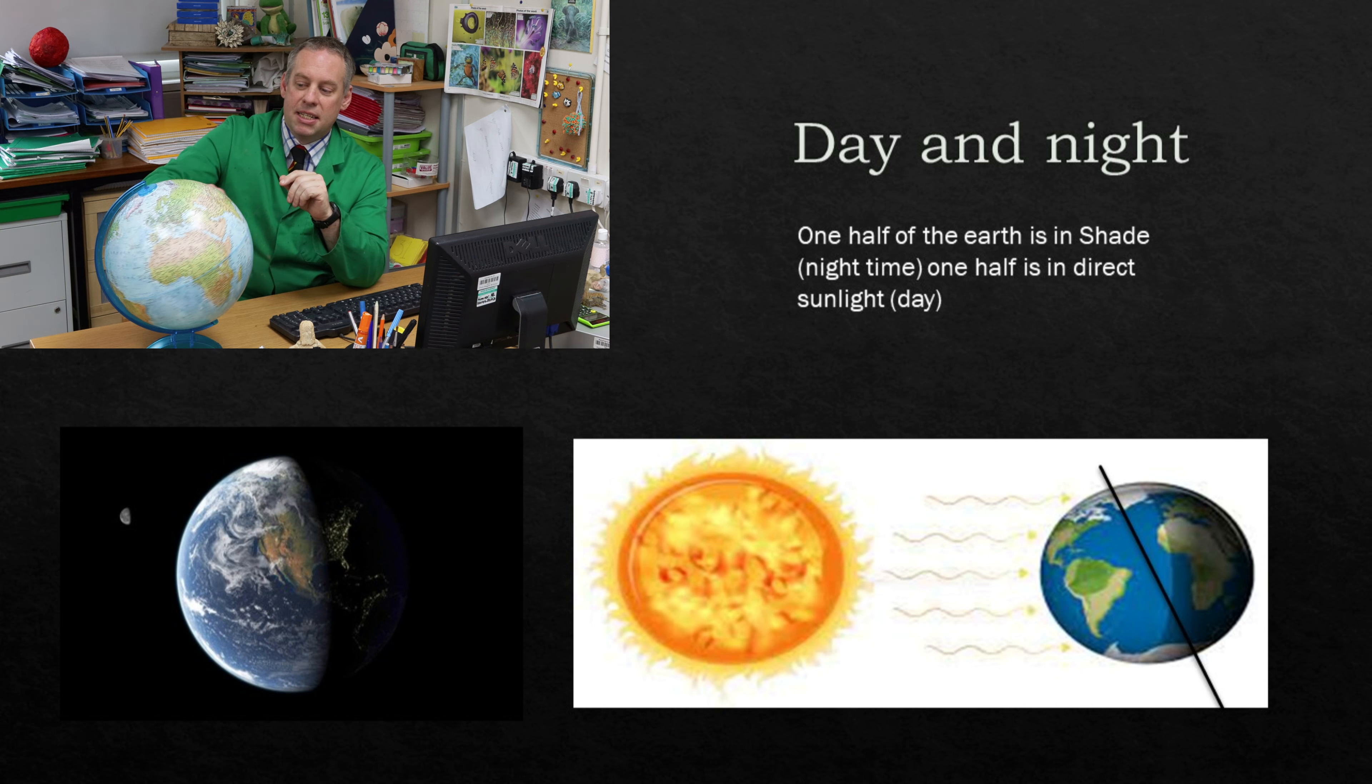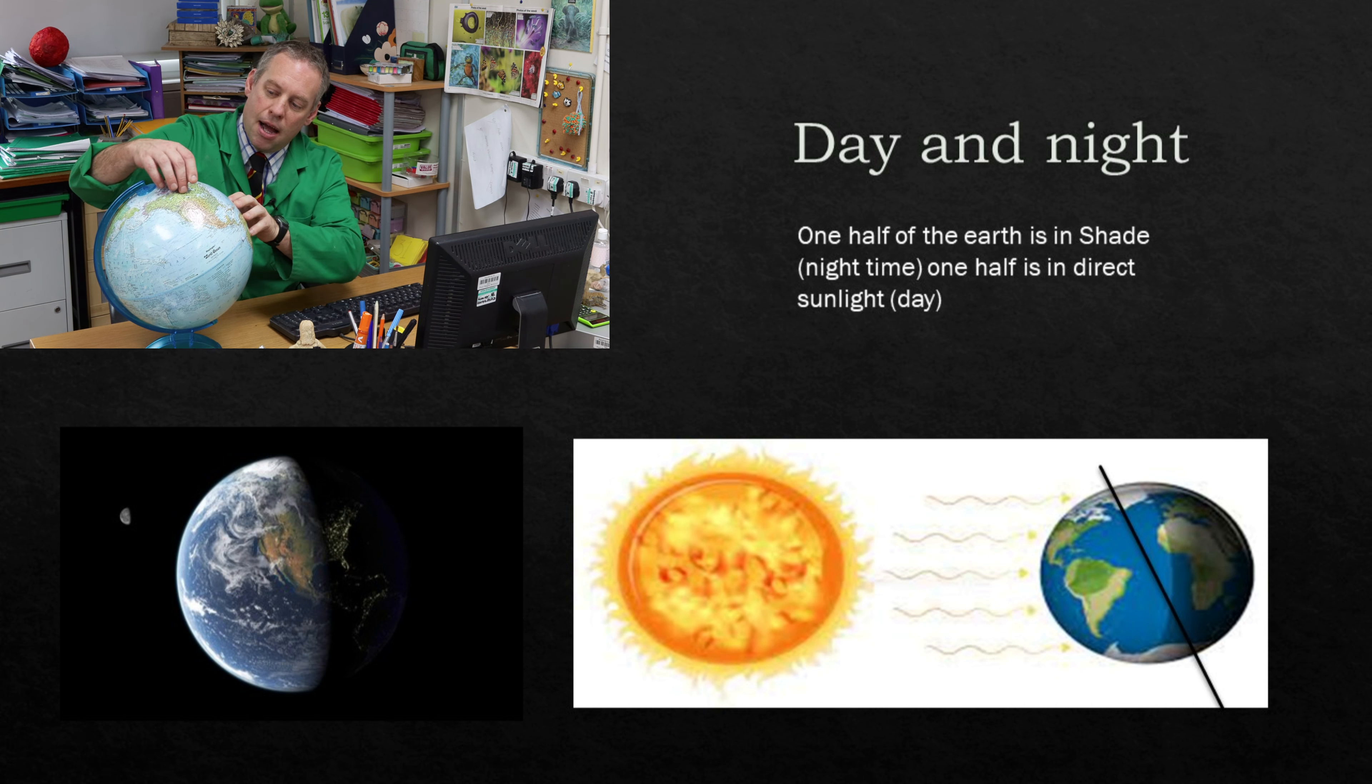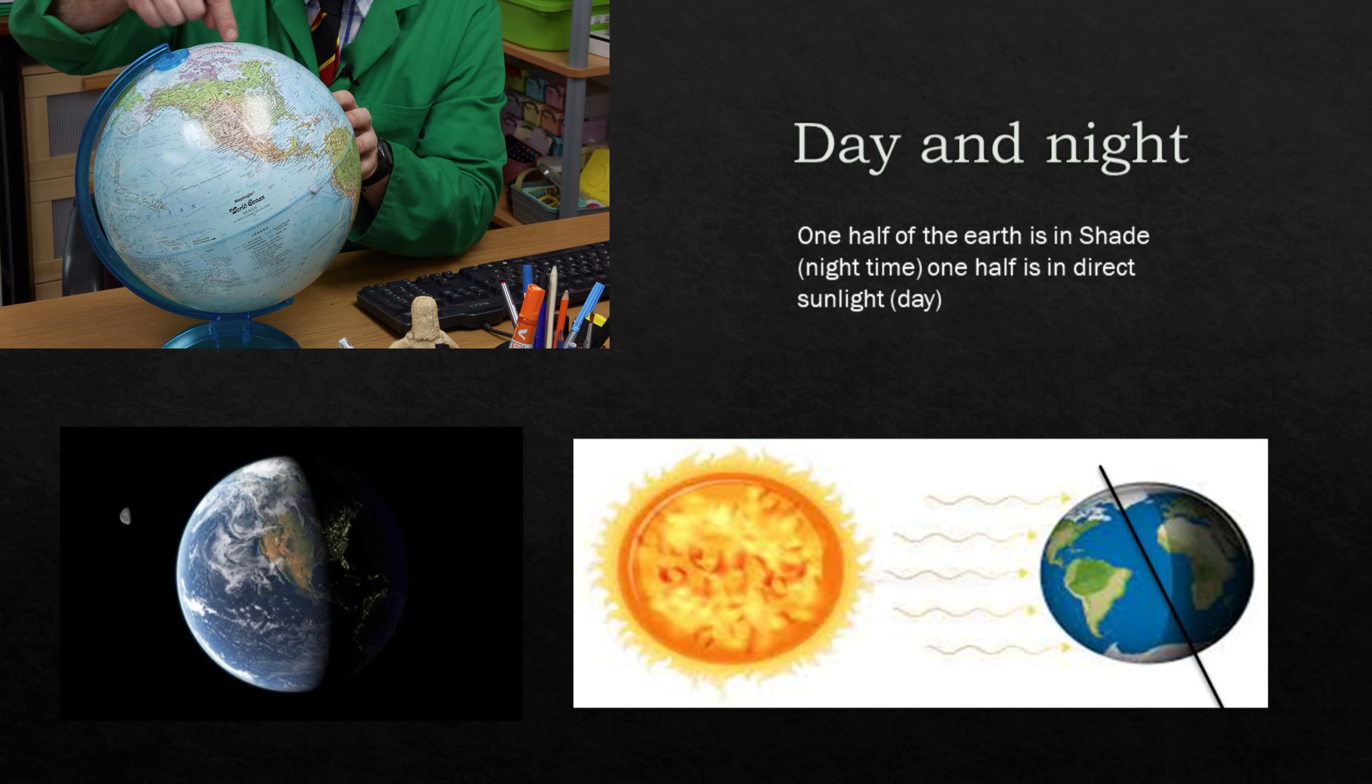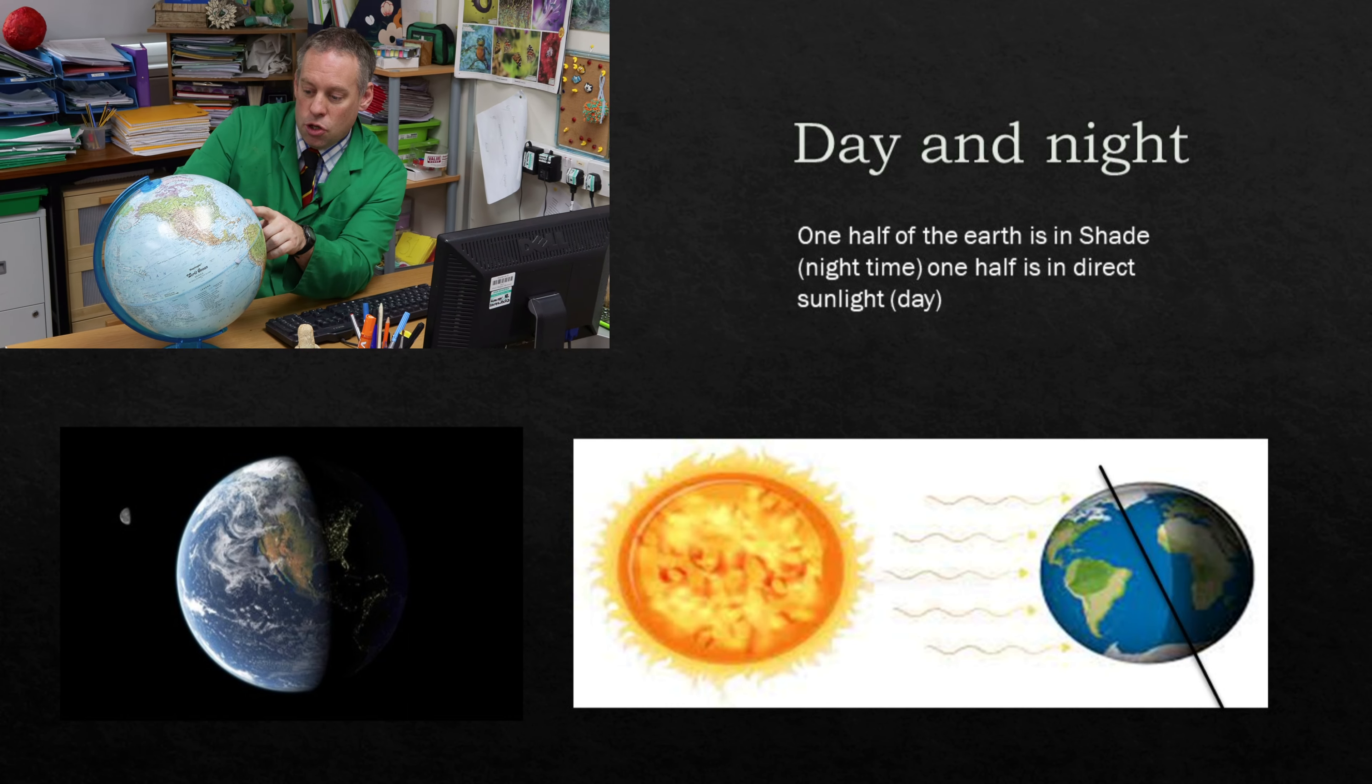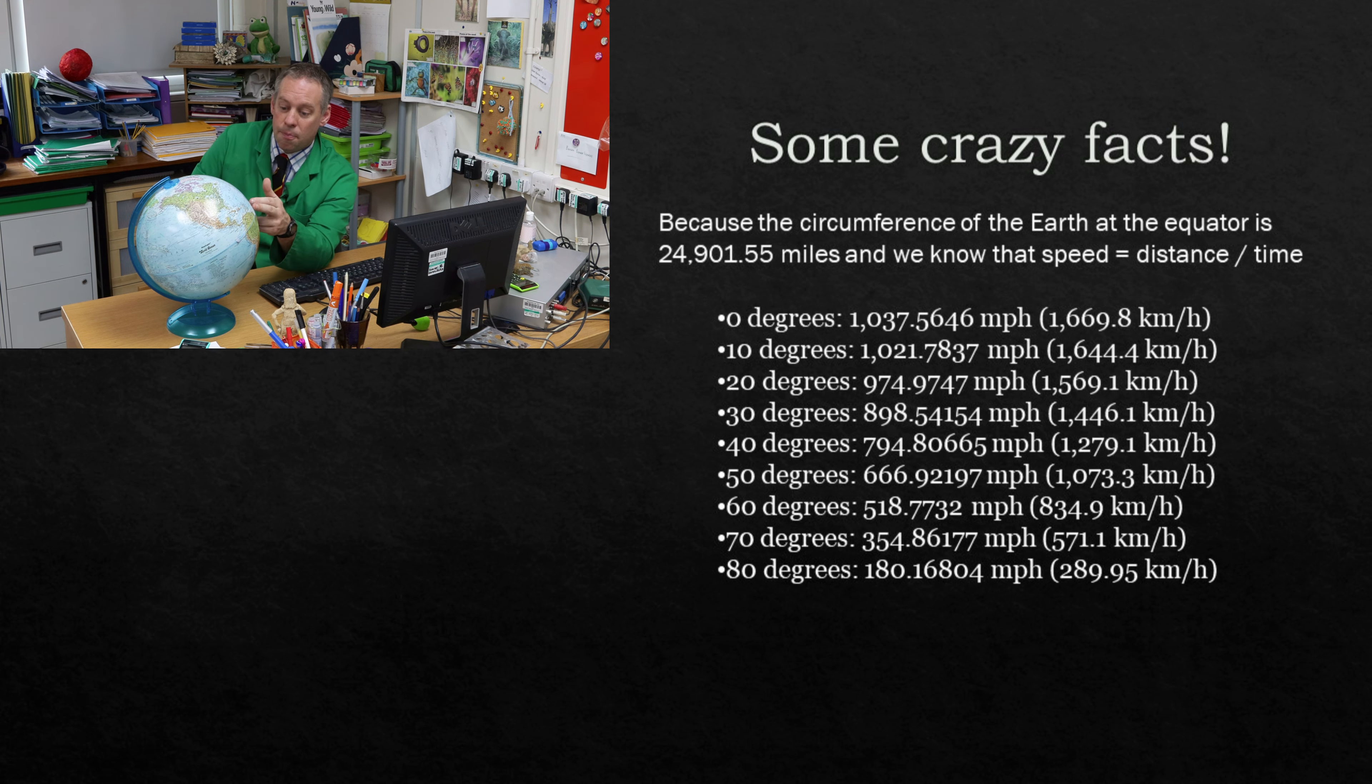Where you stand on the earth will dictate how fast you travel. So if I take two little bits of plasticine, I'll put one little bit of plasticine here and I put one little bit of plasticine up here. And I rotate my earth. You can see that the piece of plasticine at the top has traveled less far than the piece of plasticine in the middle. And so the speed you're traveling on the earth as it spins is going to be different in different places where you stand. So if you stand right on the equator you are spinning at a speed of 1,669 kilometers per hour or 1,000 miles per hour. If you're stood there, that's faster than the speed of sound you are traveling if you stand on the equator.